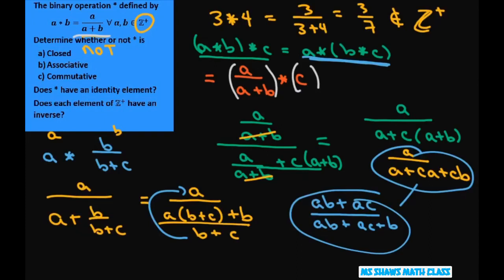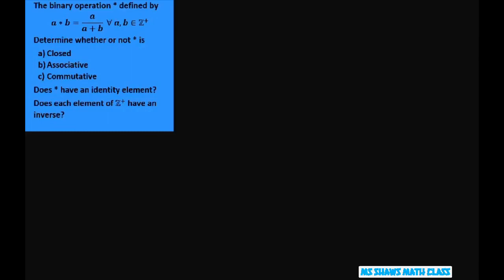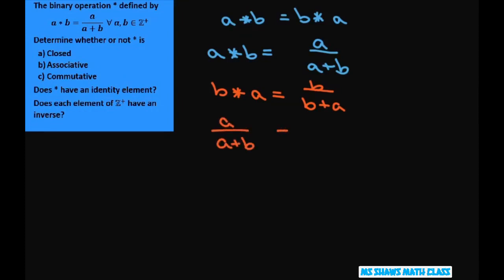That's a normal rule there, but I wanted to show you that. Now we have to show if it's commutative. So that means a star b has to equal b star a. So a star b equals a divided by a plus b, and b star a equals b divided by b plus a. So a divided by a plus b does not equal b divided by b plus a. So it is not commutative.